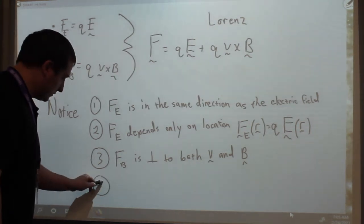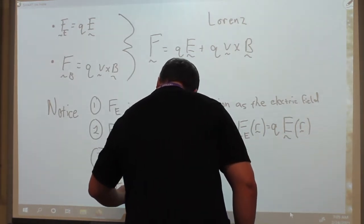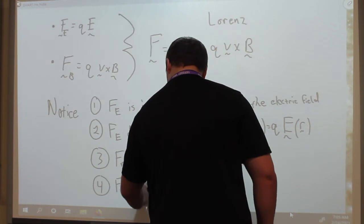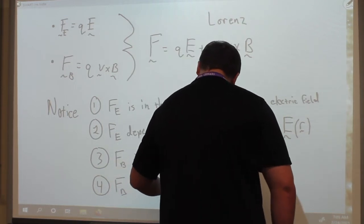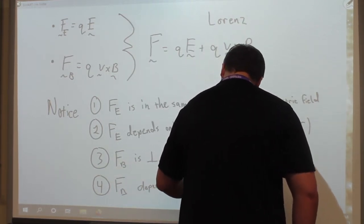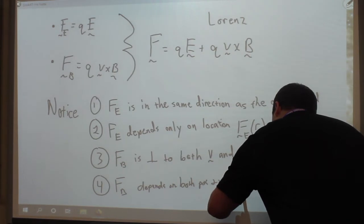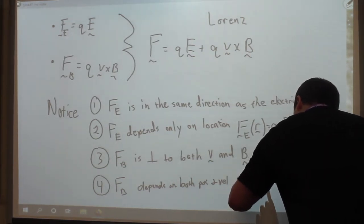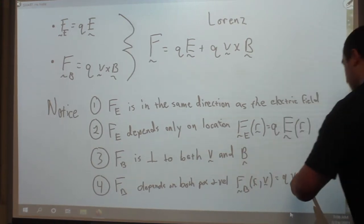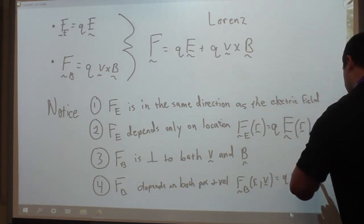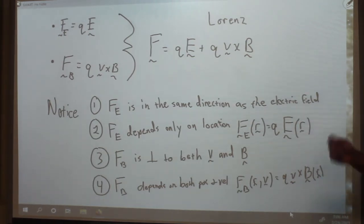Four, the magnetic force depends on both position and velocity. I could write the magnetic force F_B as a function of the position vector and the velocity vector, because the velocity vector appears explicitly in the equation, and the magnetic field might change with position. So the magnetic force depends both on where you are and how you're moving.